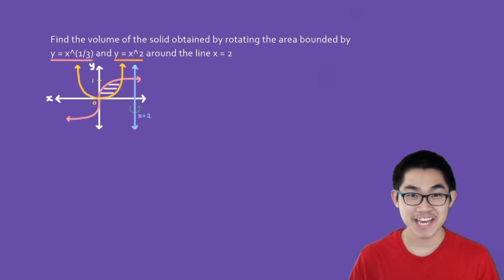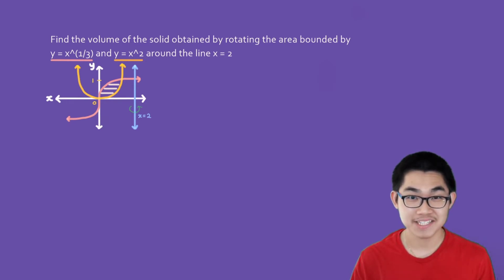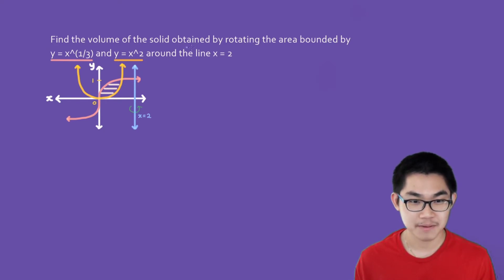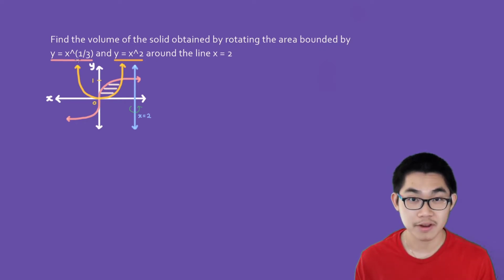Hi guys! Today we're going to talk about solids of revolution rotated around vertical lines to the right of the y-axis. So let's take a look at this problem. Find the volume of the solid obtained by rotating the area bounded by y equals x to the power of 1/3.